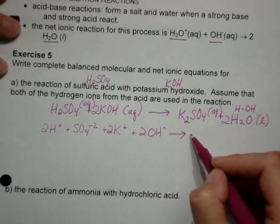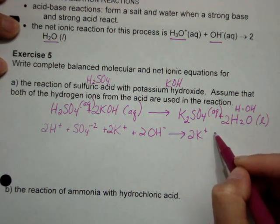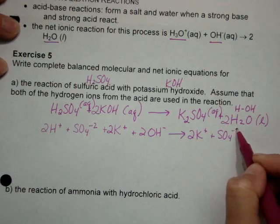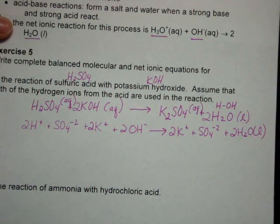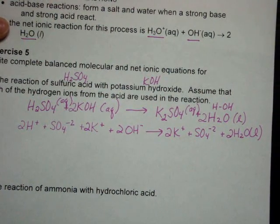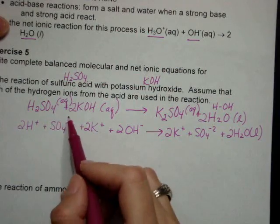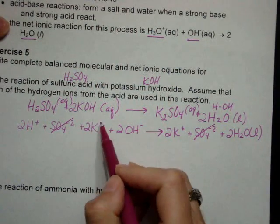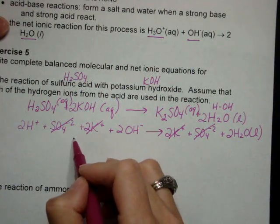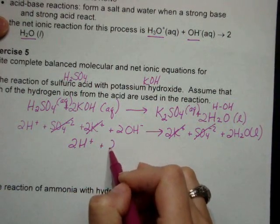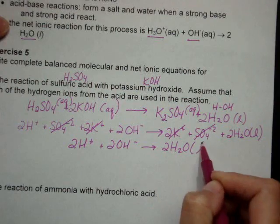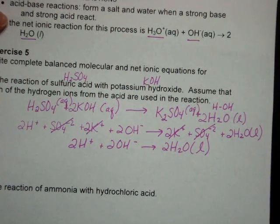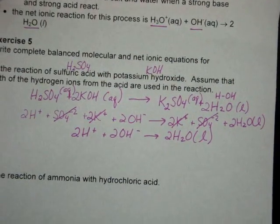And that breaks down or becomes two potassium ions plus a sulfate ion. And liquid stays together, so two water. Now we can go through and cancel out our spectator ions. In this particular case, we have sulfate and we have potassium. And that leaves us with 2H plus plus 2OH minus yields 2H2O liquid.